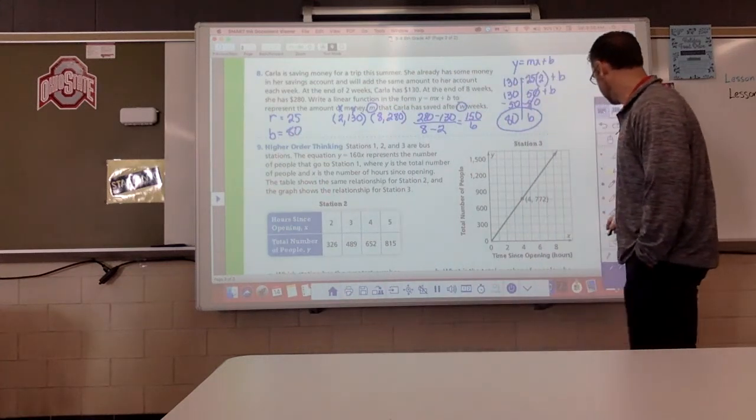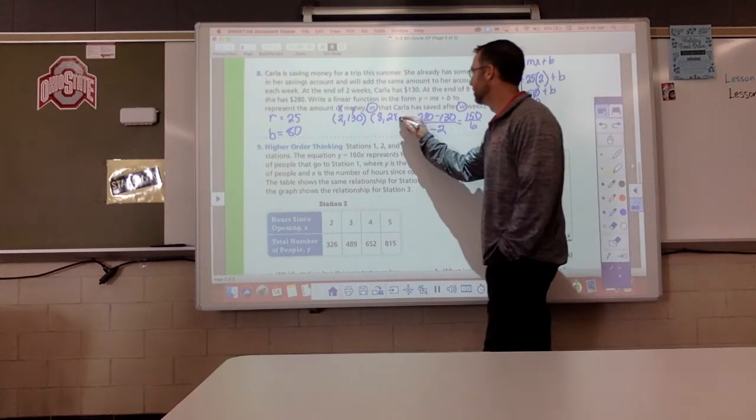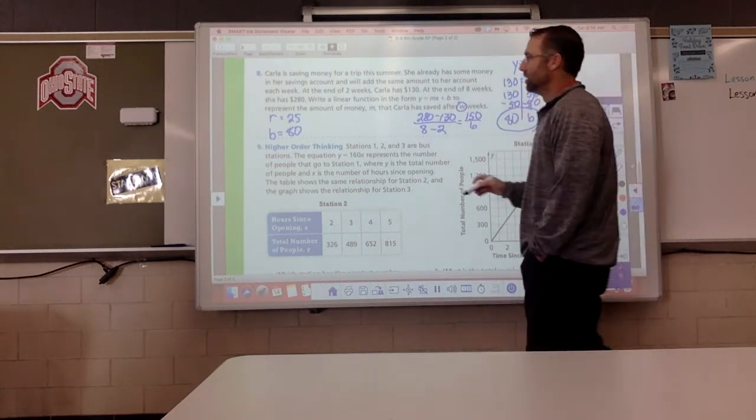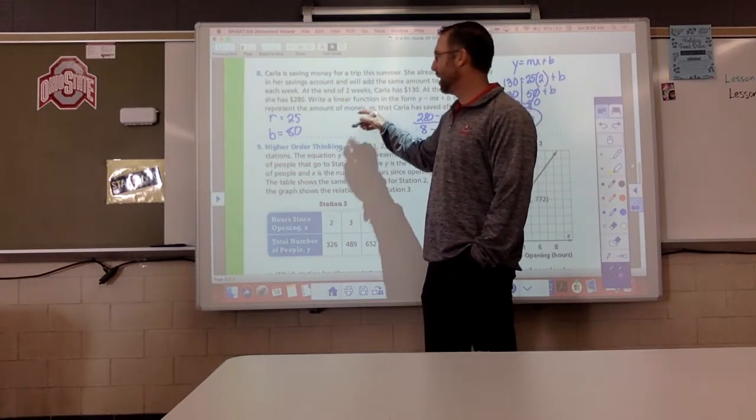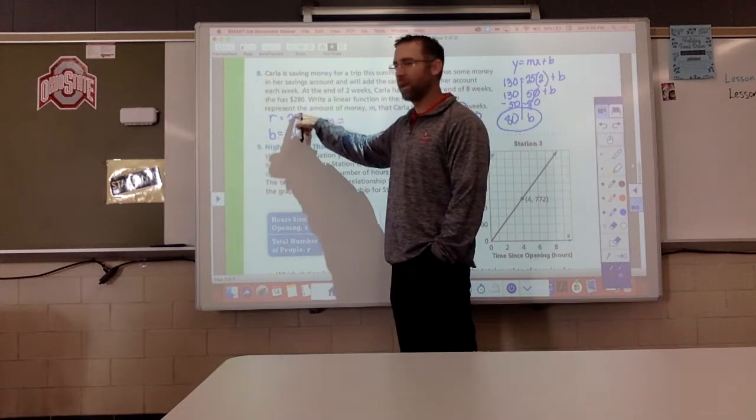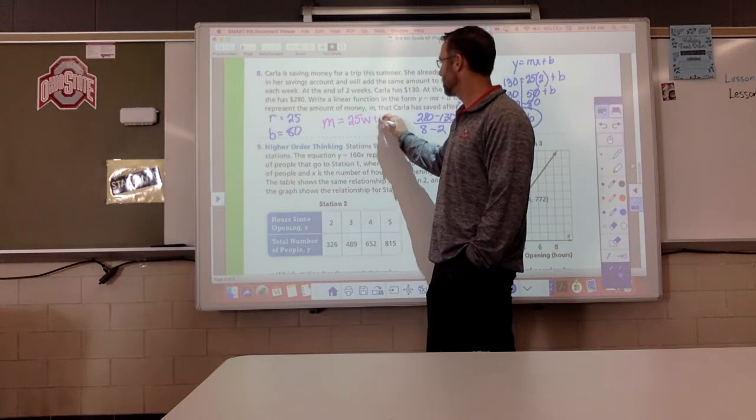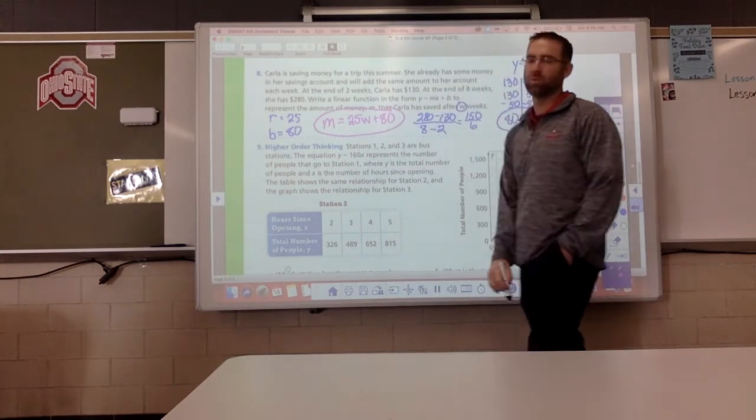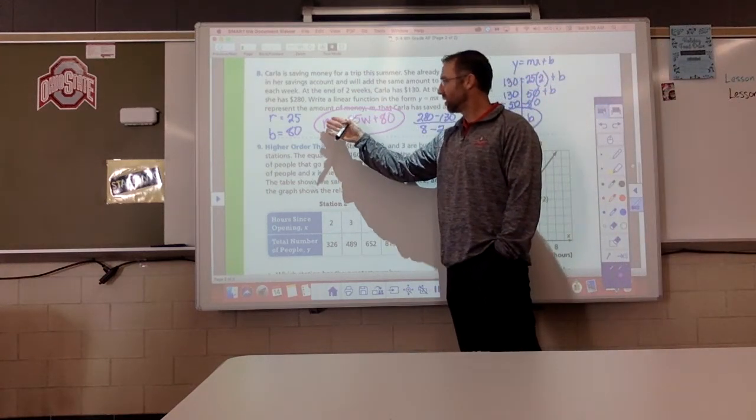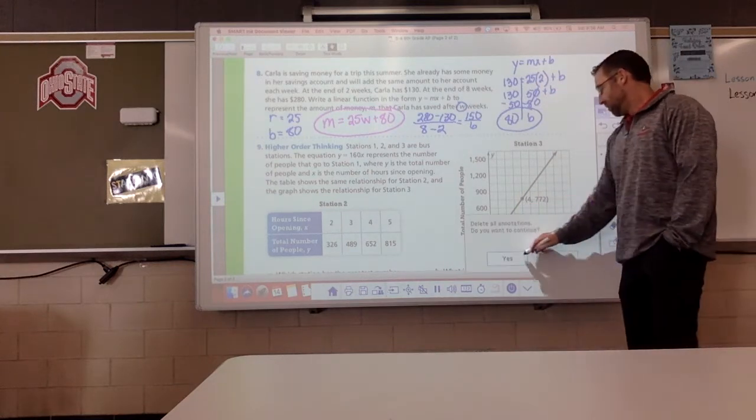Now, write the equation. I got to clear some stuff out here. We need some room. So, I'm just going to write it right here. Put it in purple. Now, they wanted to use m for the amount of money. So, the amount of money she has is equal to our rate of change, which is 25 times the number of weeks plus how much money she started with. So, 25w plus 80. There is your slope that relates the amount of money with the number of weeks for Carla.